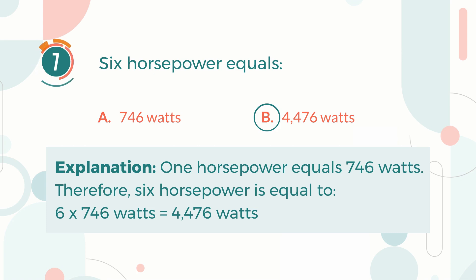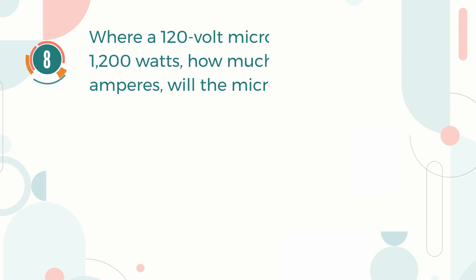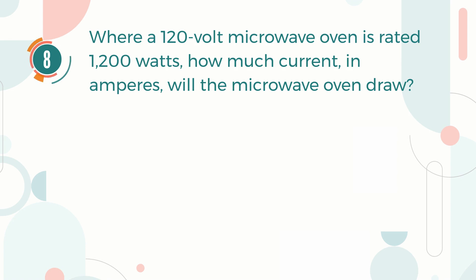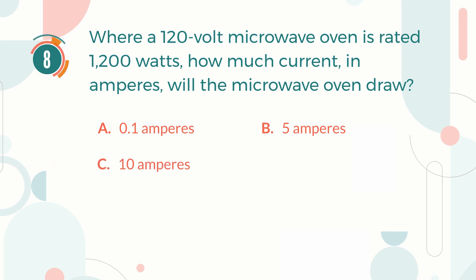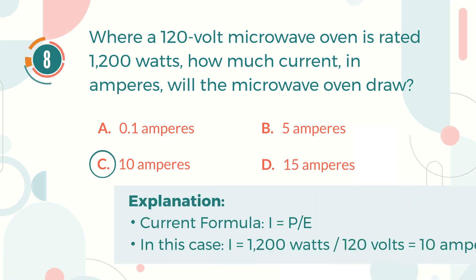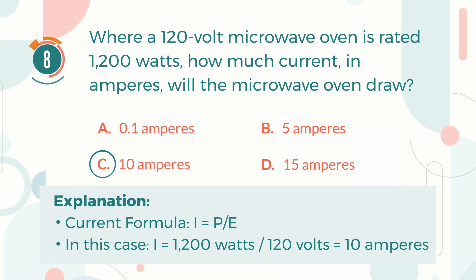Number eight: Where a 120 volt microwave oven is rated 1,200 watts, how much current in amperes will the microwave oven draw? A) 0.1 amperes, B) 5 amperes, C) 10 amperes, D) 15 amperes. The correct answer is C, 10 amperes. We apply the current formula: current equals power divided by voltage. Current equals 1,200 watts divided by 120 volts, giving the answer of 10 amperes.